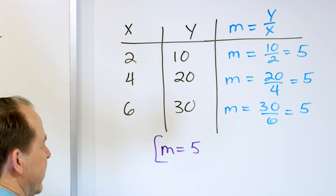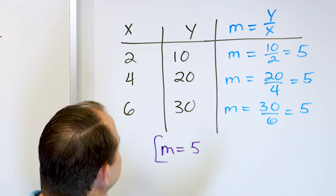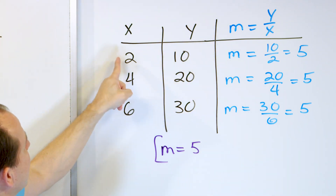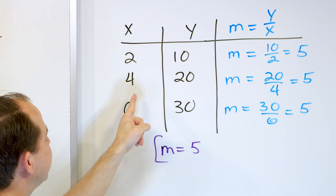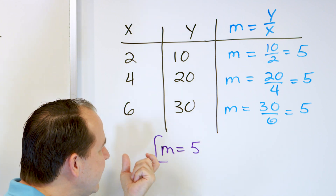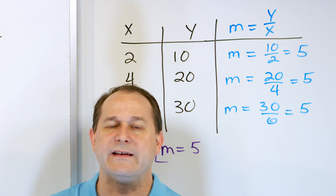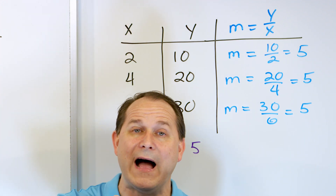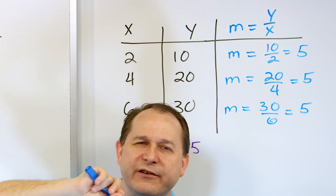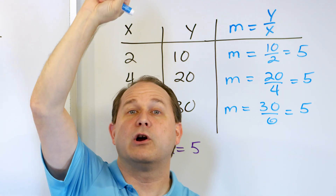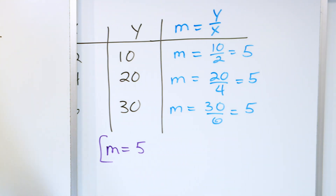Physically, a constant of proportionality (slope) of 5 means the Y coordinate is 5 times larger than the X coordinate: 2×5=10, 4×5=20, 6×5=30. That's why it measures slope — the Y value grows 5 times faster than X, so the line rises very steeply.